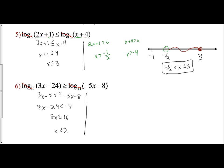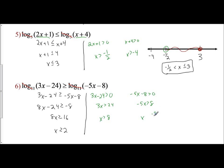However, we need to check our boundaries. First, 3x minus 24 has to be greater than 0 — that's the only way our x values can exist. Add 24 and divide by 3: x can only exist when x is greater than 8. But looking at the other expression, negative 5x minus 8 is greater than 0. So negative 5x is greater than 8, and when you divide by negative 5, you have to flip the inequality, giving x is less than negative 8 fifths.